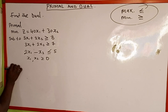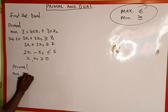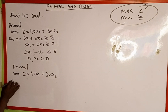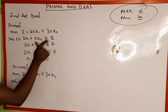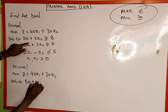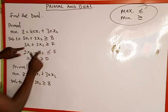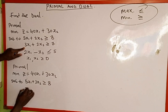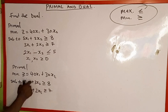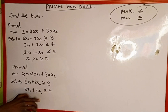Our new primal is going to be: minimization z equal to 40x1 plus 30x2, subject to: the first equation is in the correct format, so 5x1 plus 3x2 is greater than or equal to 8. The second equation is also in good format: 3x1 plus 2x2 is greater than or equal to 7. But the third equation is less than, so to convert it to greater than, we are going to multiply it by negative 1.